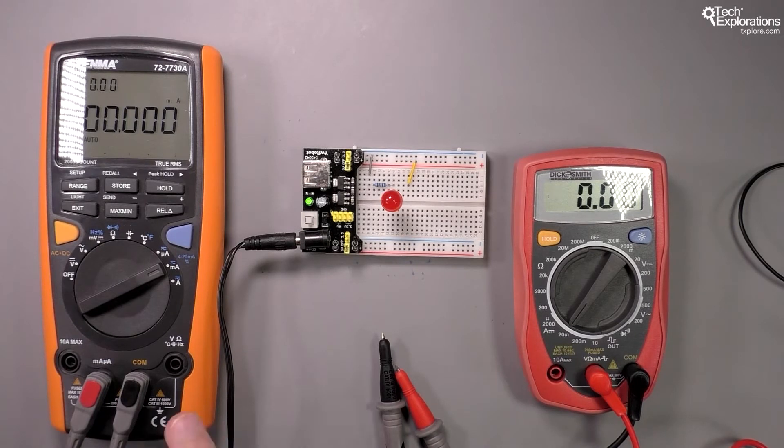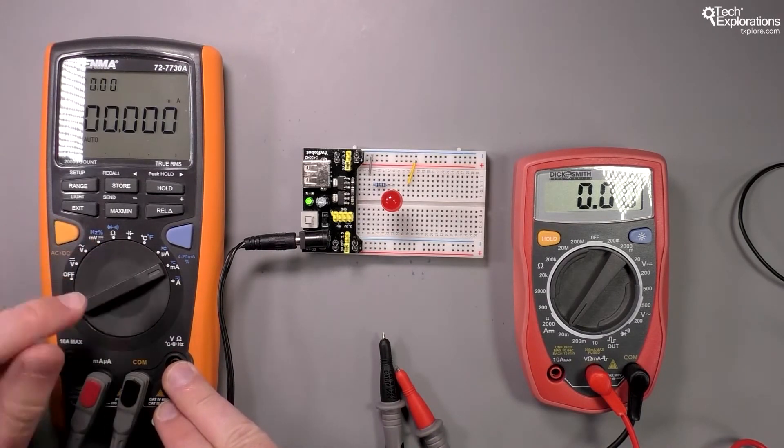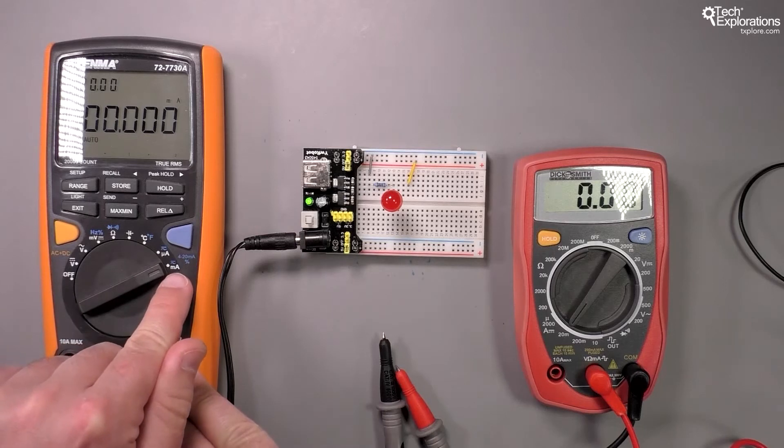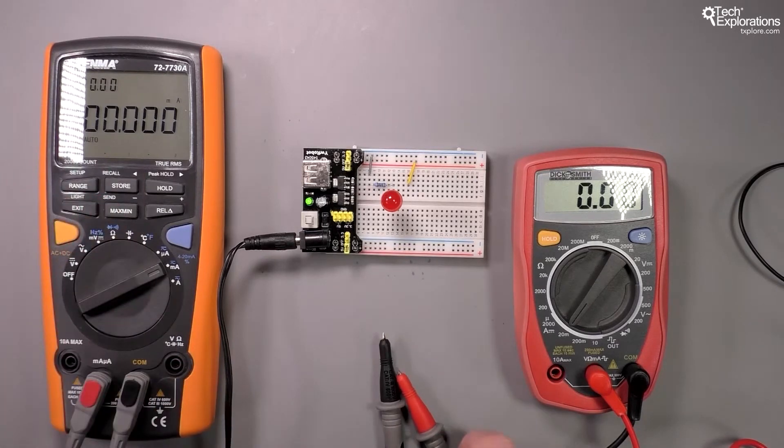Then I need to move my dial to the microamp setting so that the multimeter is ready to measure current at the microamp range.